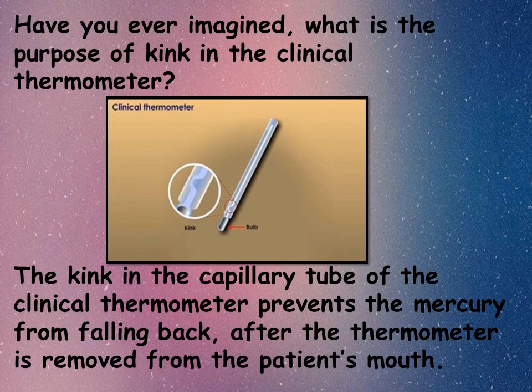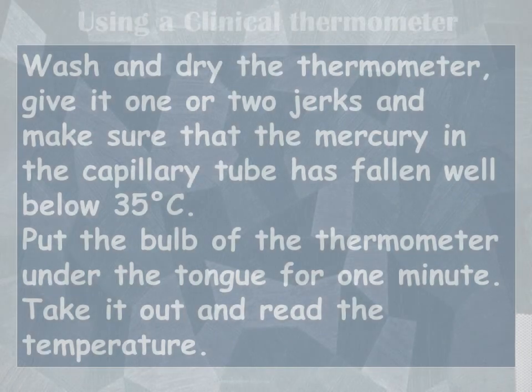Have you ever imagined what is the purpose of the kink in the clinical thermometer? The kink in the capillary tube of the clinical thermometer prevents the mercury from falling back after the thermometer is removed from the patient's mouth. So it helps us to measure the temperature of the body correctly.